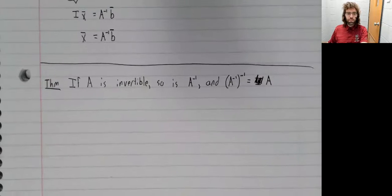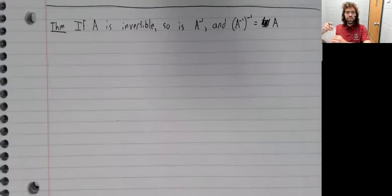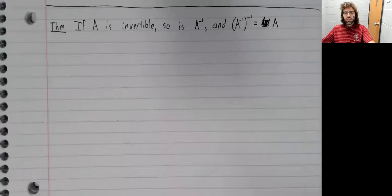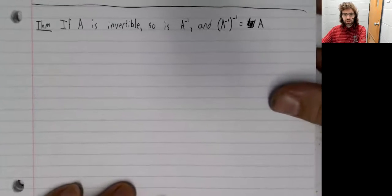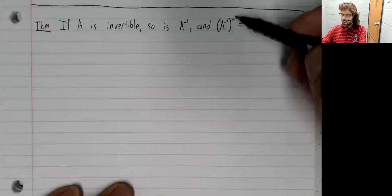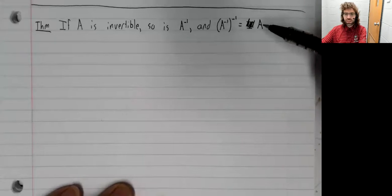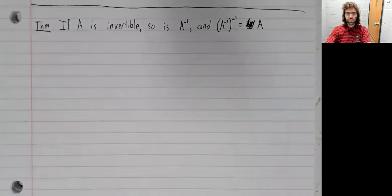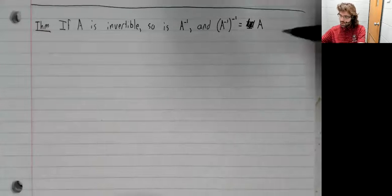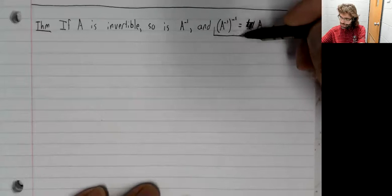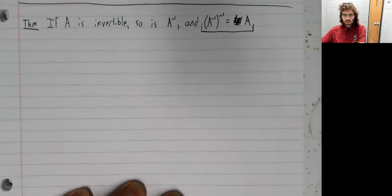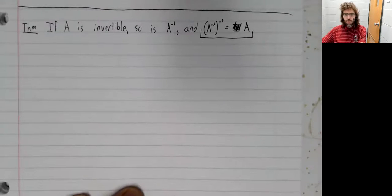Theorem: If A is invertible, so is A inverse. And the inverse of an inverse is the original matrix. This is so straightforward when you write it down that it can barely be called a proof.